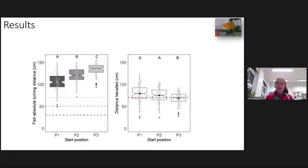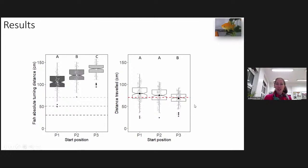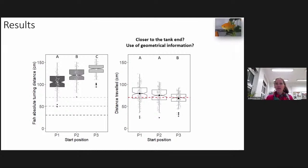We also wanted to determine if travel distance was affected by start position. At all three start positions, fish traveled a distance not significantly different from the target distance. However, at the third start position, fish were on average closer to the target distance compared to positions P1 and P2. This can indicate that goldfish might also use some geometrical information to be more precise about their distance estimation.